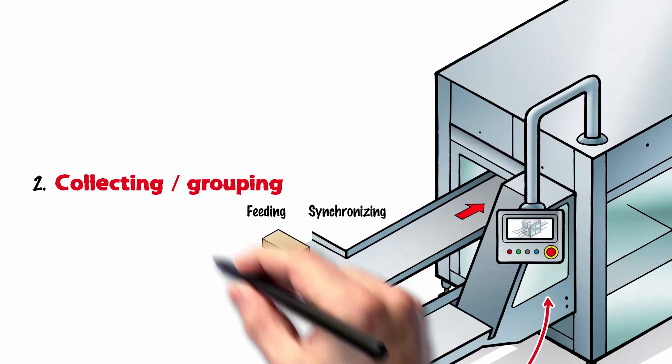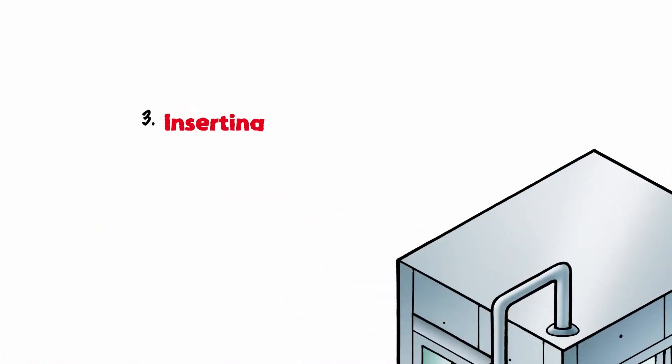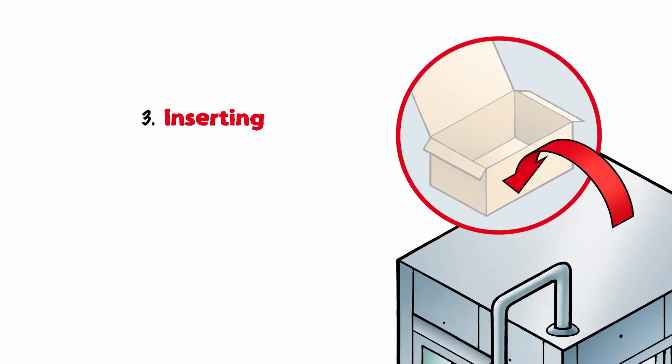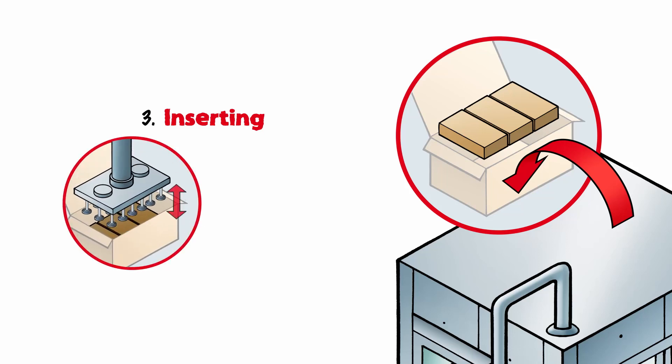The grouped products now need to be put into the prepared box. Robot kinematic models are a popular choice for this operation, a tripod robot, for instance. It is flexible and can meet specific customer requirements relating to the insertion of products.